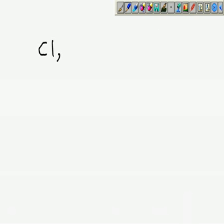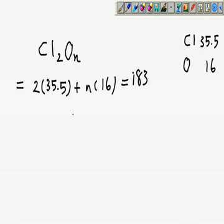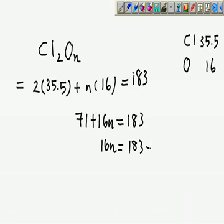What does 183 mean? It means the RAM relative atomic mass. Chlorine is 35.5 but oxygen is 16. So can I put 2 times 35.5 and then plus N times 16 because the RAM of oxygen is 16. That would equal to 183. So 71 plus 16N equals to 183 minus 71. So that would give you 112, so N will be 7. N is 7.